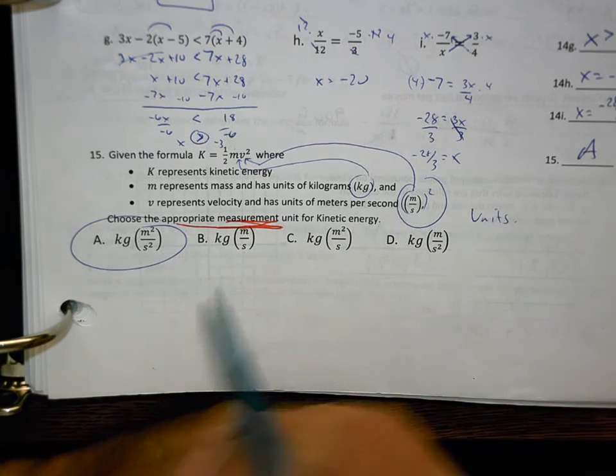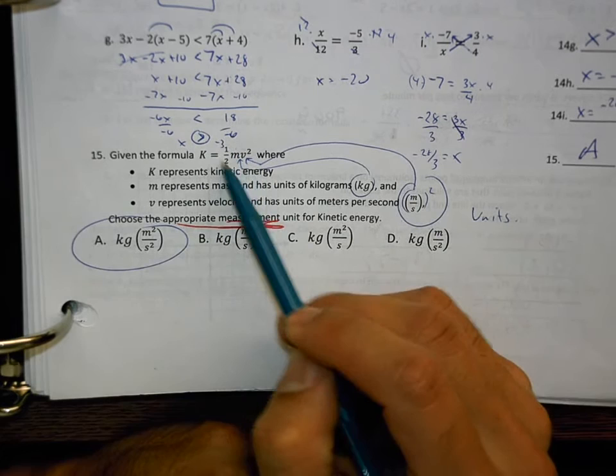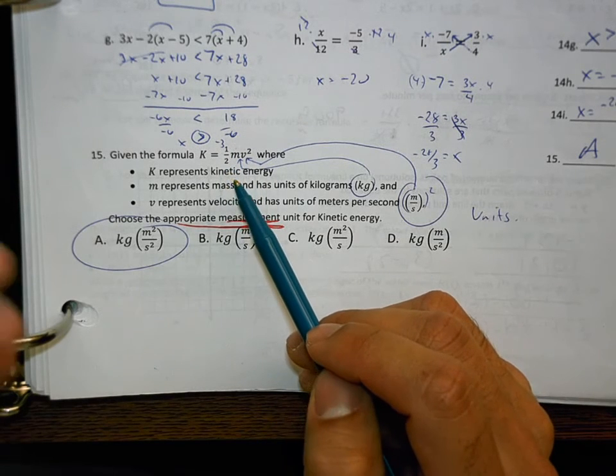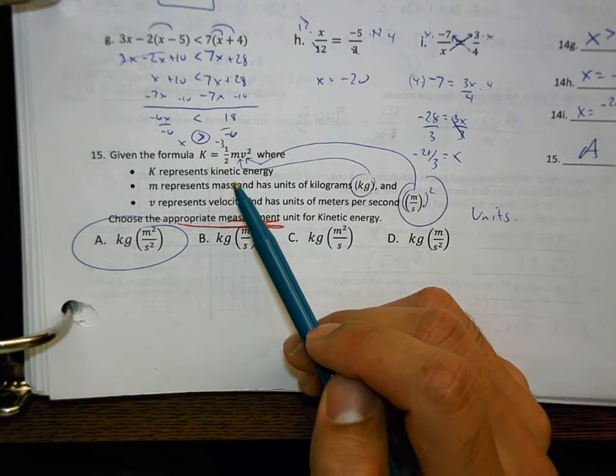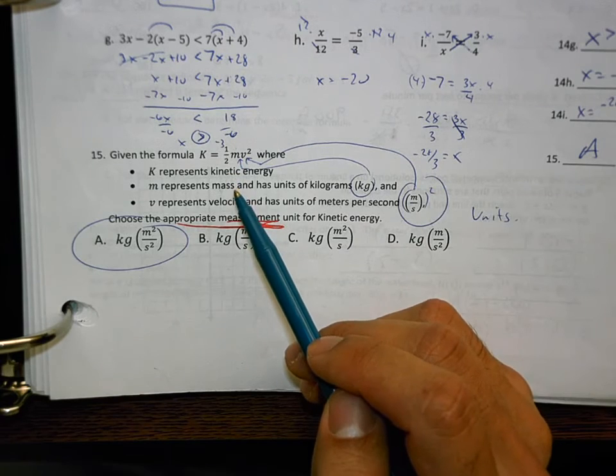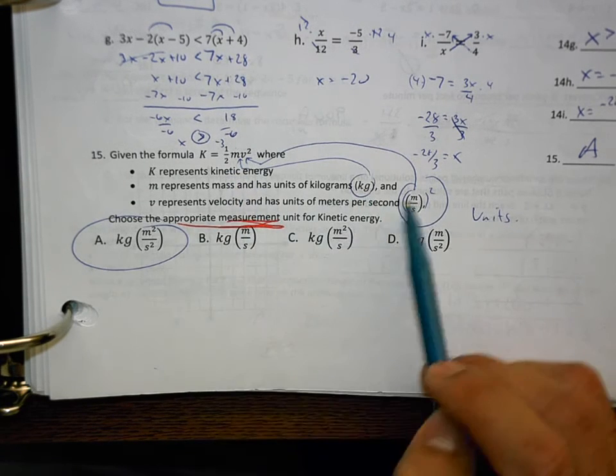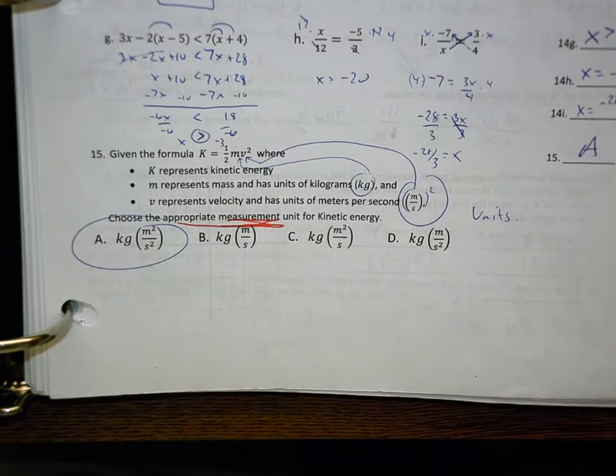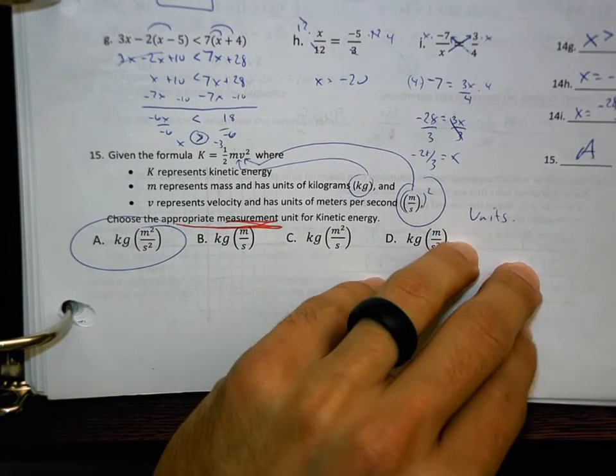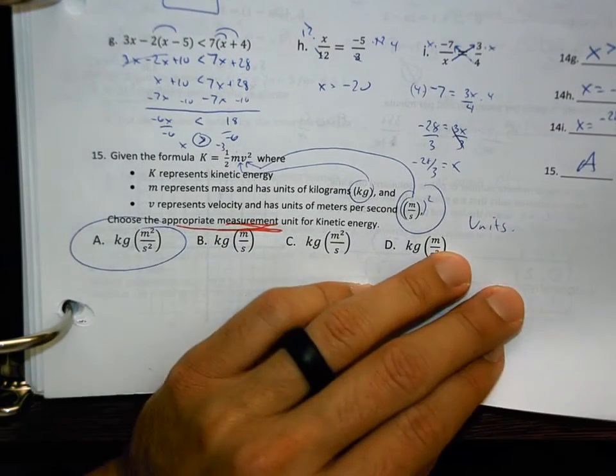And the only one that matches is A, kilograms times meters squared per second squared. What this is checking to see is do you know how that the units are going to match any formulas that you plug them into? It doesn't even matter if you know what this formula is or what it represents because this is used in physics, in high-level physics, as a matter of fact. It doesn't matter that. What you need to know is that the units that you measure it in, you plug it in, it should mathematically come out correct when you plug in those units.